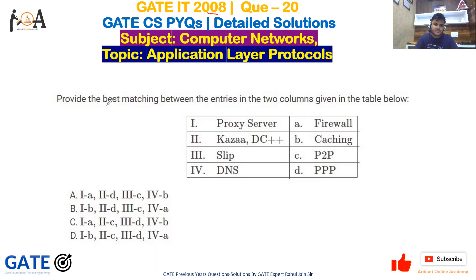The question asks us to provide the best matching between the entries in the two columns given in the table below. As you can see, we have a table and we need to match the entries of one column with the other column.